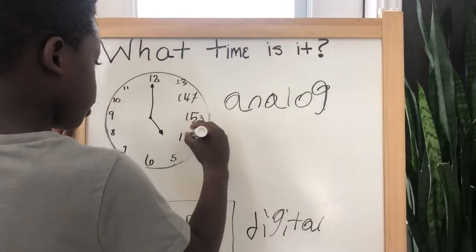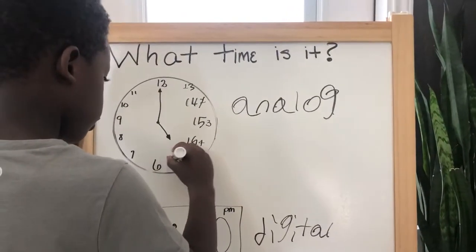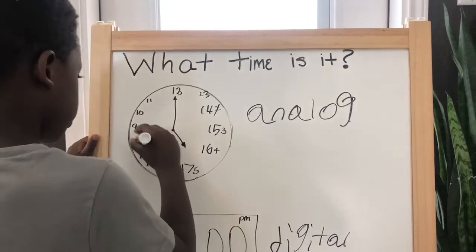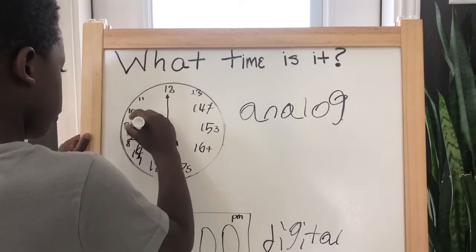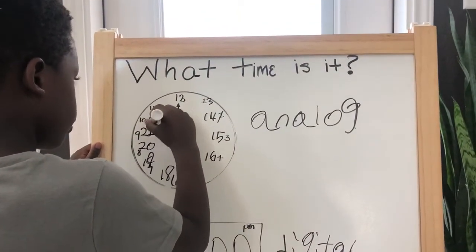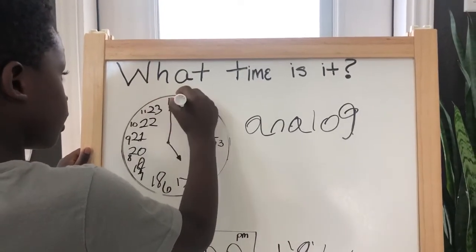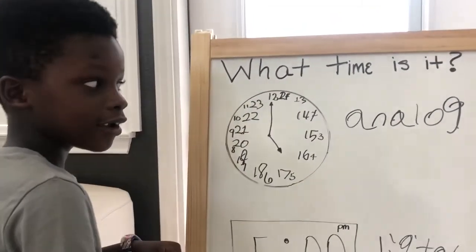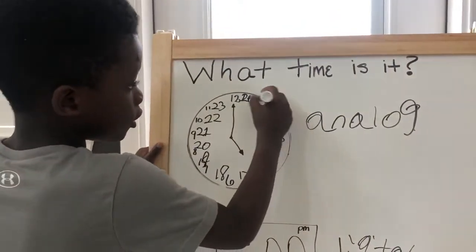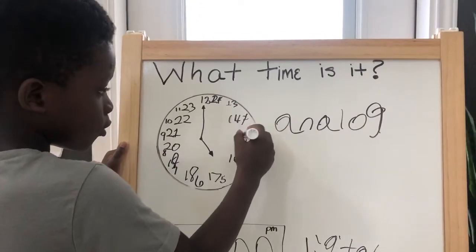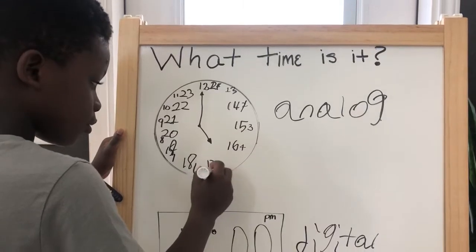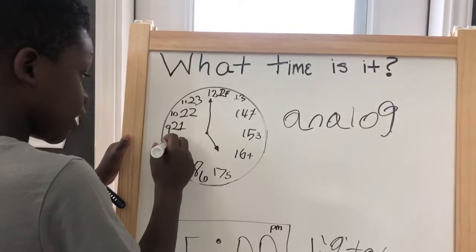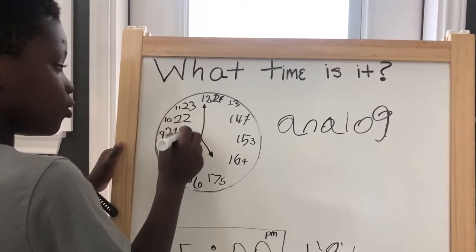And then you just keep on going over and over. But as you can see, this would be 13, 14 is 2, 15 is 3, 16 is 4, 17 is 5, 18 is 6, 19 is 7, 20 is 8, 21 is 9, 22 is 10, 23 is 11.